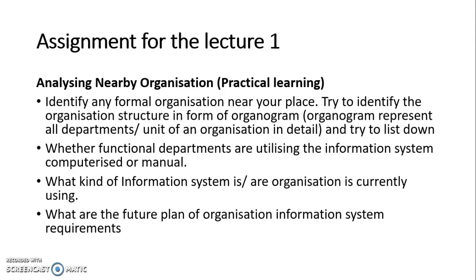This is an assignment for students: visit a nearby organization — formal or informal, government or private — and identify the organization structure by designing an organogram with its departments and units. Then identify the functional department information needs, what kind of information systems they currently use, and what their future plans are for information system requirements. Students will gain first-hand knowledge about IS requirements, and compare how government and private organizations source their information and how managers make decisions. This would be a very interesting exercise.